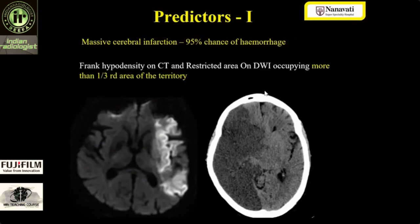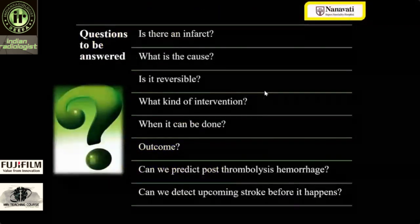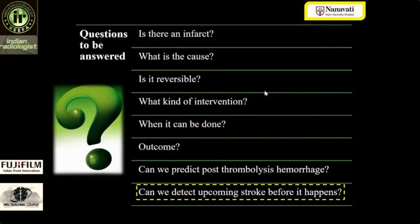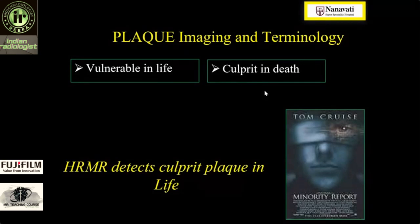There are various other predictors as well. If the area involved is more than one third of the territory, there are more chances of post-thrombolysis hemorrhage. An ASPECT score less than 7 is a poor prognosticator; more than 7 is good. We can also predict future stroke risk — if someone has developed a lacunar infarct, always do an MR angio and look for any vessel wall thickening or luminal narrowing. You can thereby predict that this person is at risk of future upstream emboli, and stenting may be done to prevent such events.